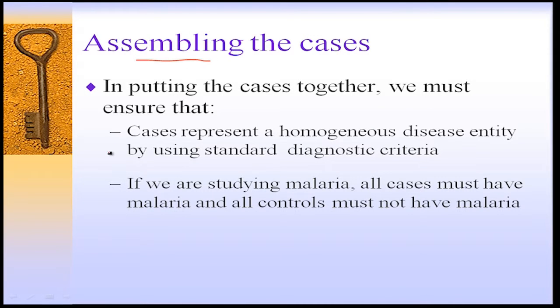How do we assemble the cases in a case control study? We must ensure that cases represent a homogeneous disease entity by using standard diagnostic criteria. For example, if we are studying malaria, all cases in a case control study must have malaria, and all controls must not have malaria.